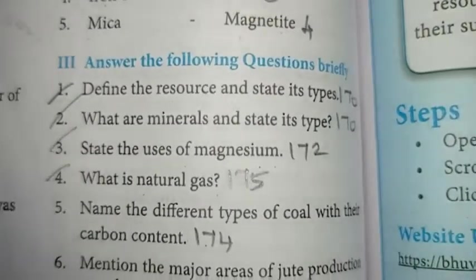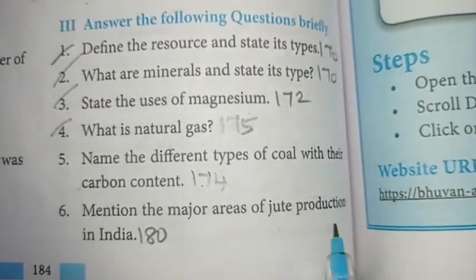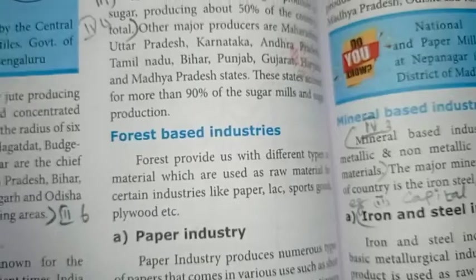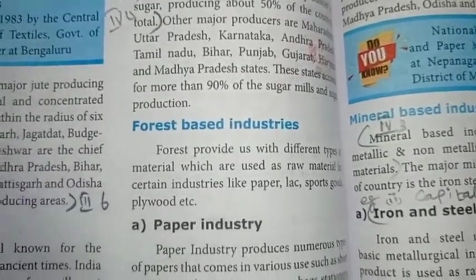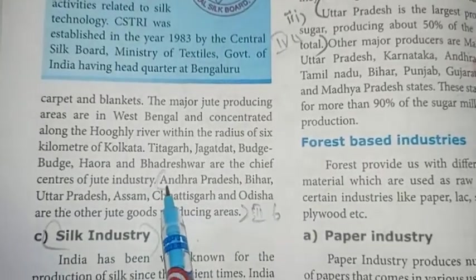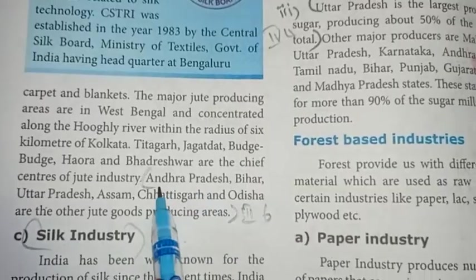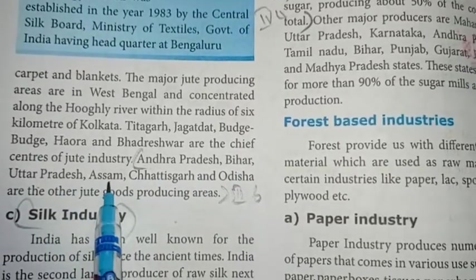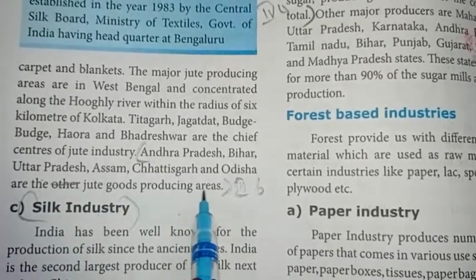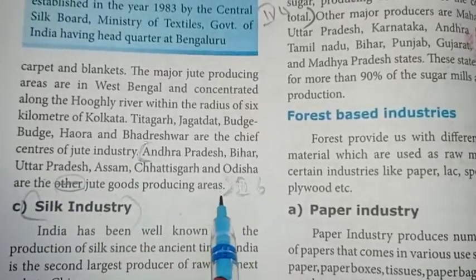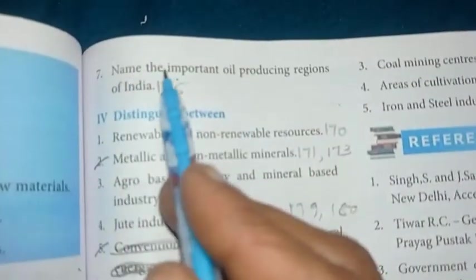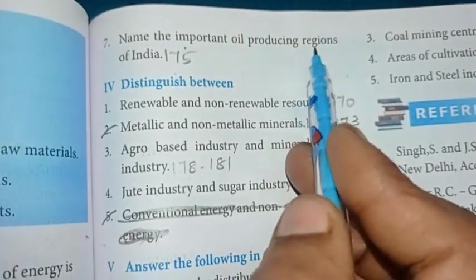Sixth one: mention the major areas of jute production in India. Page number 180. Andhra Pradesh, Bihar, Uttar Pradesh, Assam, Chhattisgarh and Odisha are the jute goods producing areas.